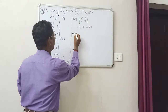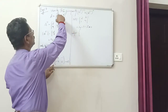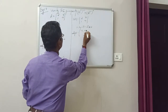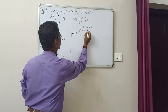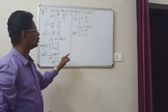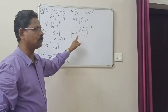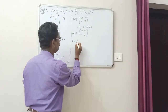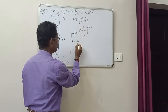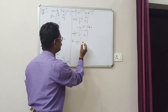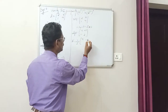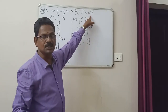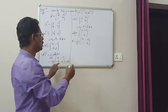Adjoint of A: for a 2x2 matrix, swap the diagonal and change signs of off-diagonal. So A inverse equals 1 by determinant of A, which is 1/5, into adjoint of A, which is [[7, -9], [-1, 2]].